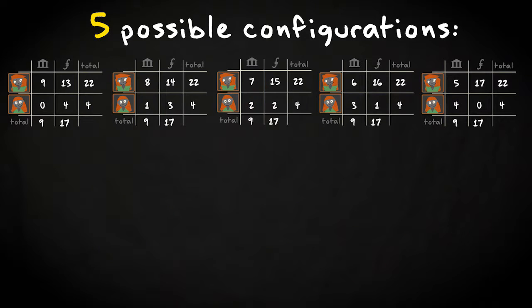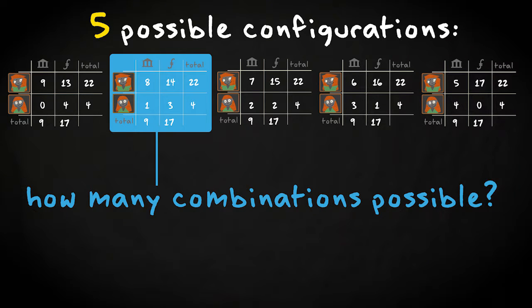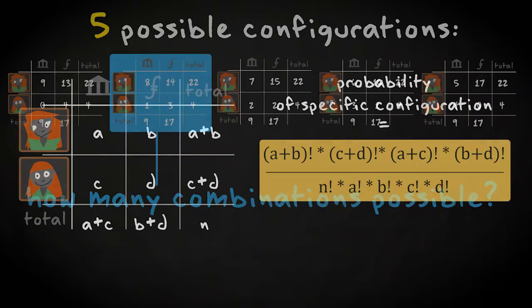There are in total only 5 possible configurations given these marginal values. They are shown here for decreasing values of the upper left cell. The question now is, how many combinations are possible within each configuration? Fortunately, there is an equation to calculate it. Here it is.